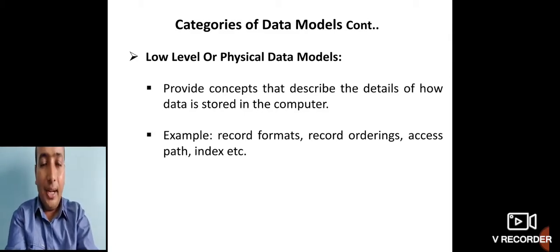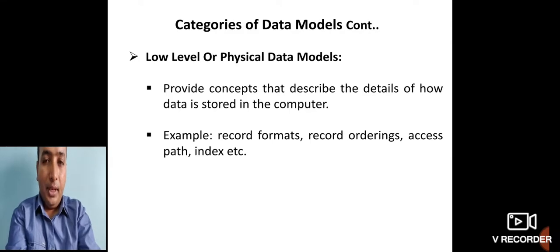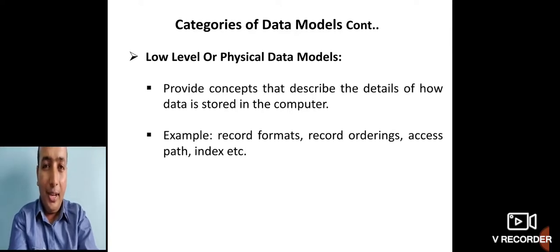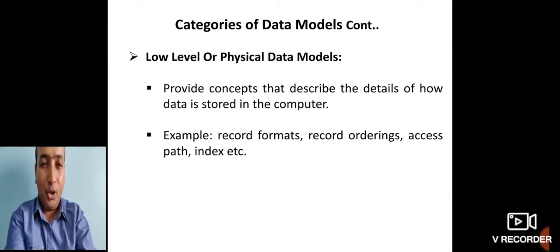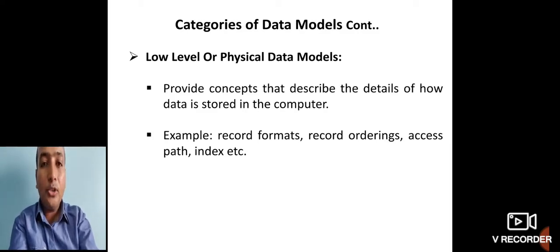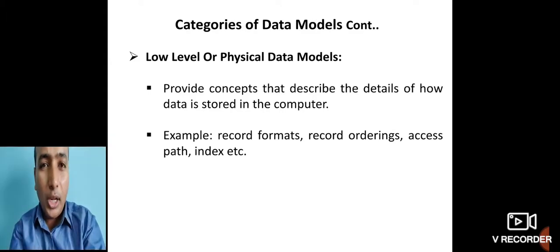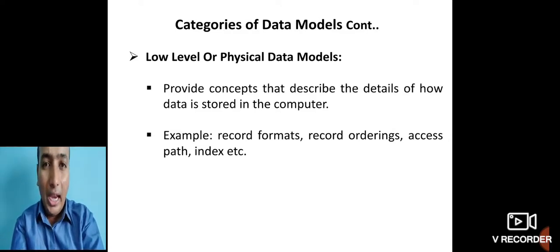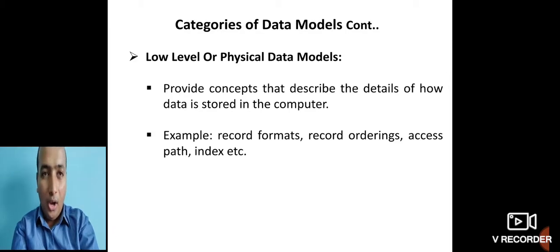The second category is the low-level or physical data model, which provides concepts describing the details of how data is stored in your computer. Rather than focusing on entities or attributes, this model deals with actual data storage — including record formats used for storing data, record orderings, and access paths such as file systems, index systems, or hashing techniques used for storing data.